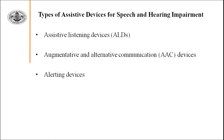Now we should discuss the types of Assistive Devices. Generally, we can divide Assistive Devices into three types. One is Assistive Listening Devices — in abbreviation, ALDs. The second is Augmentative and Alternative Communication Devices — in abbreviation, AAC, by which these devices are more popular. And the third is Alerting Devices.